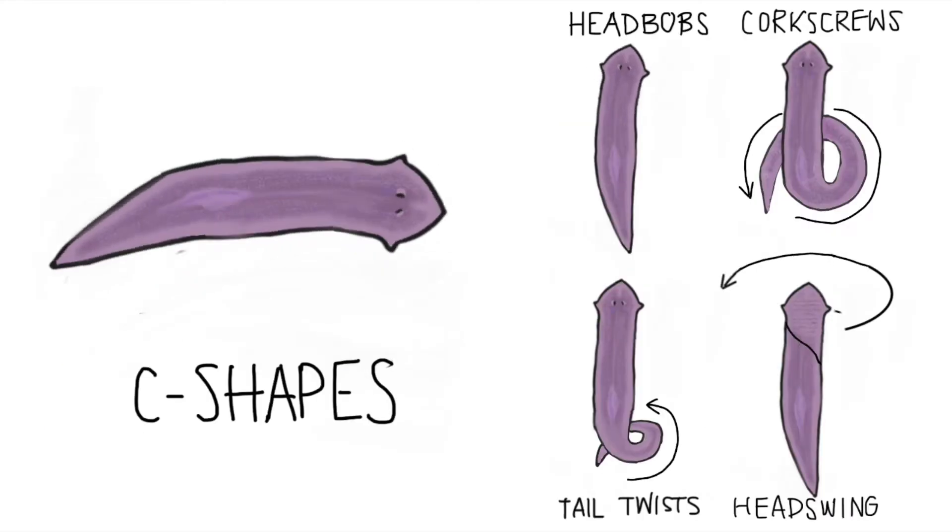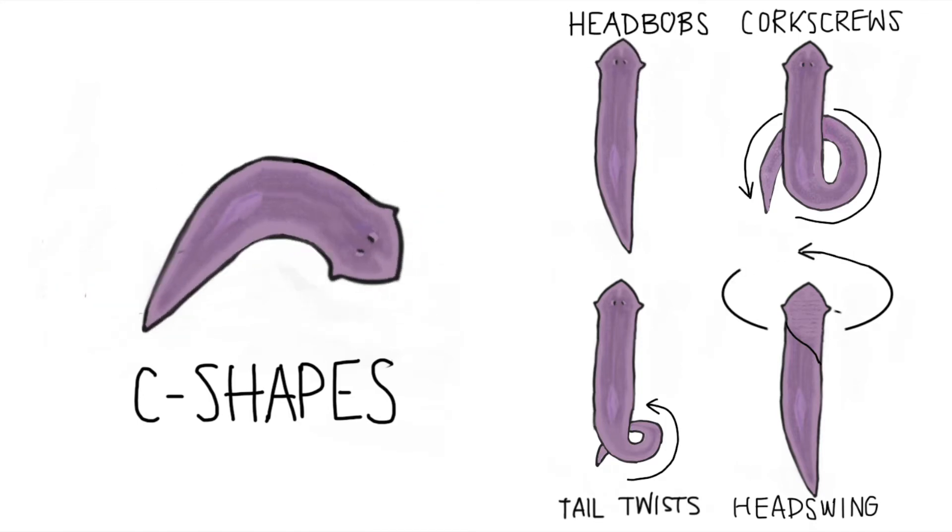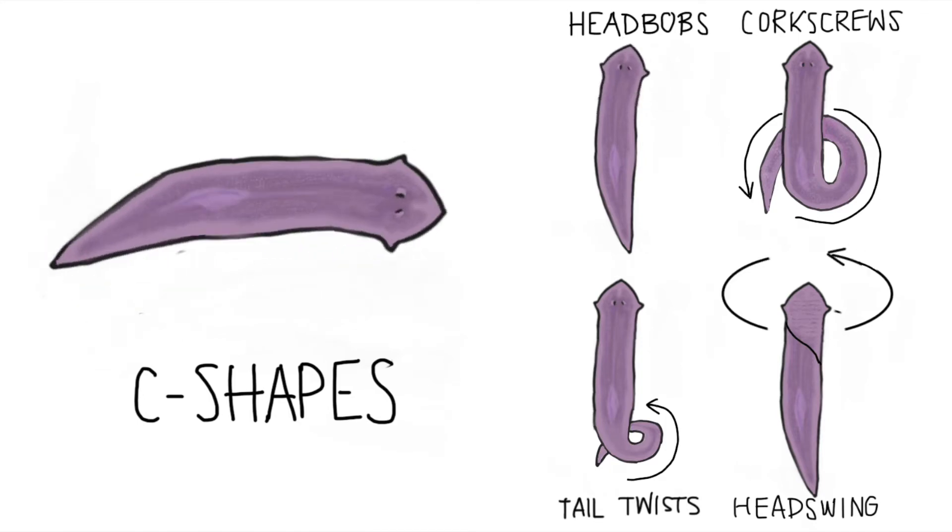In this study, we measured five types of behaviors, also called stereotypies. They were C-shapes, head swings, corkscrews, head bobs, and tail twists.